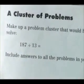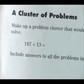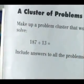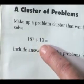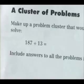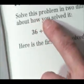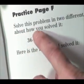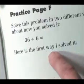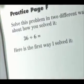And the corresponding homework from TERC is baffling to parents. Here's one. A cluster of problems. Make up a problem cluster that would help someone solve 187 divided by 13. Include answers to all the problems in your cluster. Most parents go, what's a cluster? How about this one? Solve this problem in two different ways and write about how you solved it. 36 divided by 6 equals. Here is the first way I solved it, space. Here is the second way I solved it. If the student just writes 6, they don't get any credit.